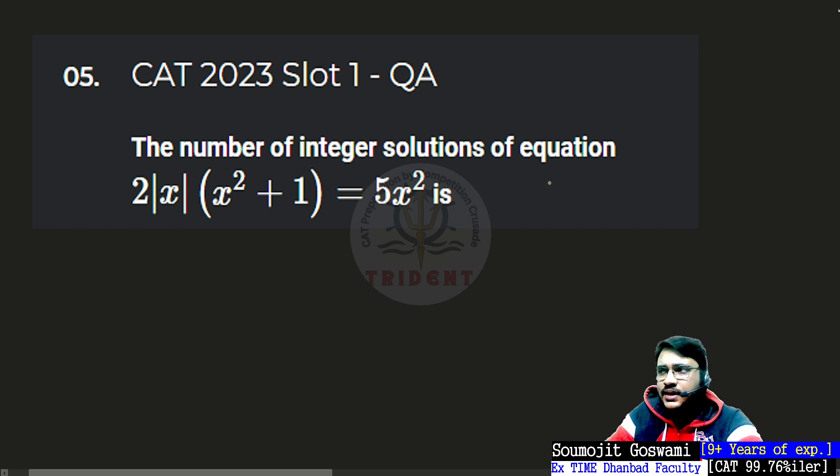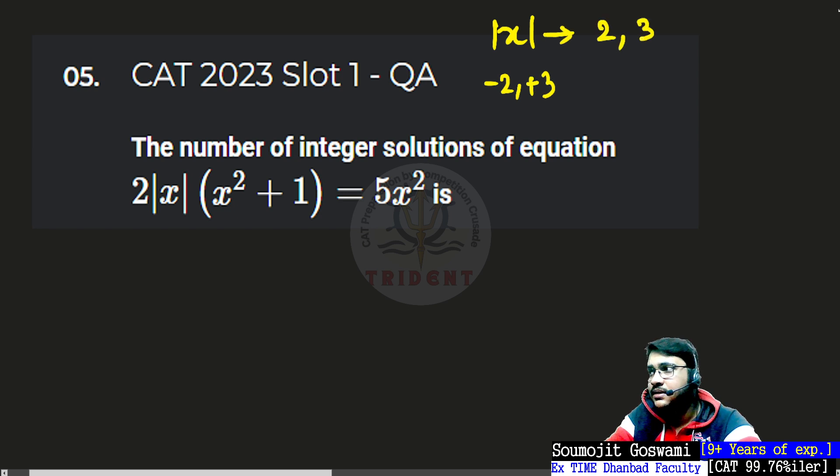First of all understand, mod of x is nothing but an operator. Mod of x is called the absolute value function. Instead of this variable x, if I would have placed any integer, let's say minus 2 or plus 3, I would have got 2 and 3 respectively. A similar working function is the square function. The square function is like this: it's x square.